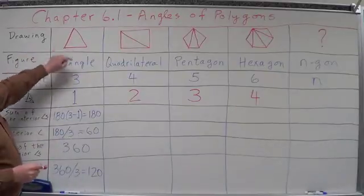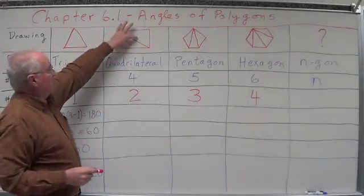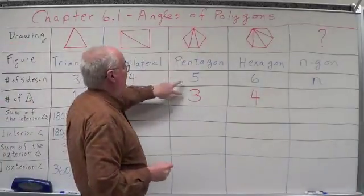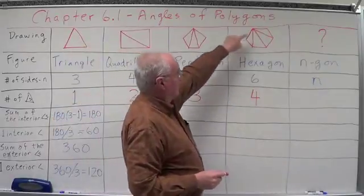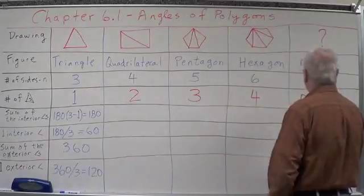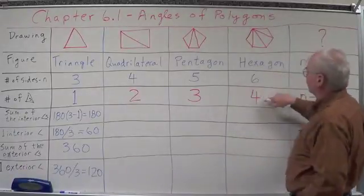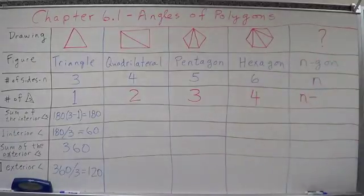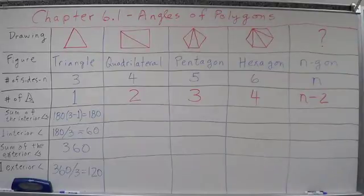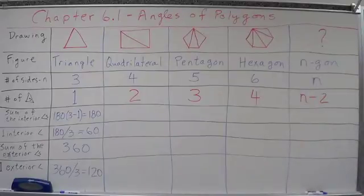A regular triangle has three sides and gives one triangle. A four-sided figure gives two. A five-sided figure gives three. A six-sided figure gives four. So for an n-sided figure, it looks like the number of triangles we can get is: take the number of sides and subtract two. That's the pattern — if we want to know how many triangles we can get out of any figure, take the number of sides and subtract two.